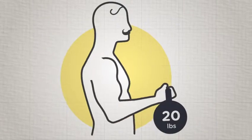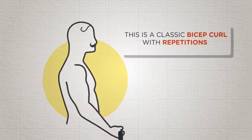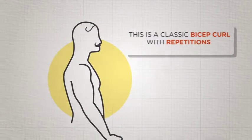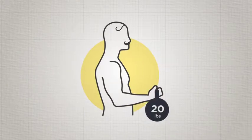To understand isometrics, let's first look at a classic bicep curl with repetitions. An isometric version of this bicep exercise would have you hold the weight still, with your bicep firing as you hold the weight during a resistance period.